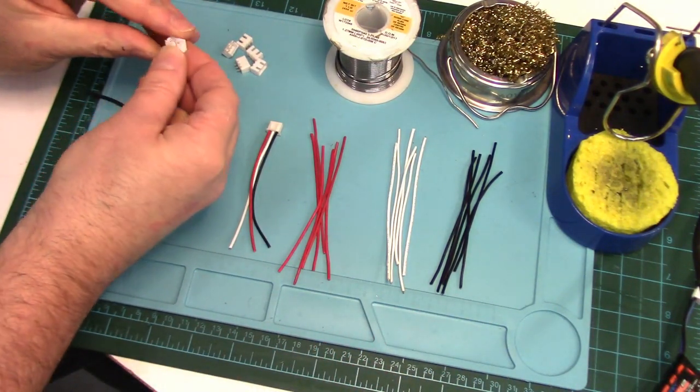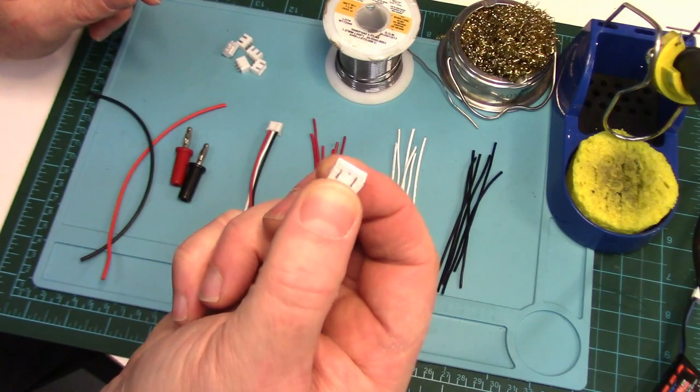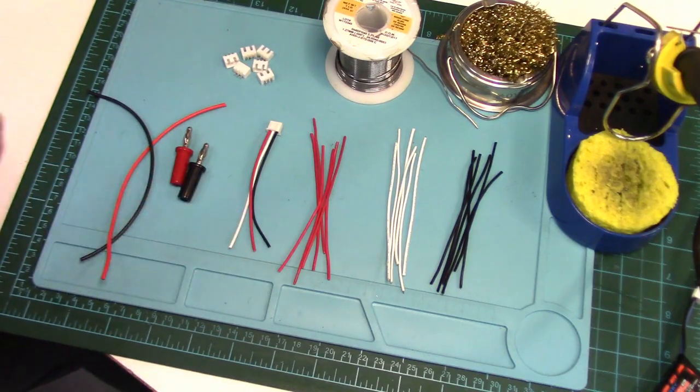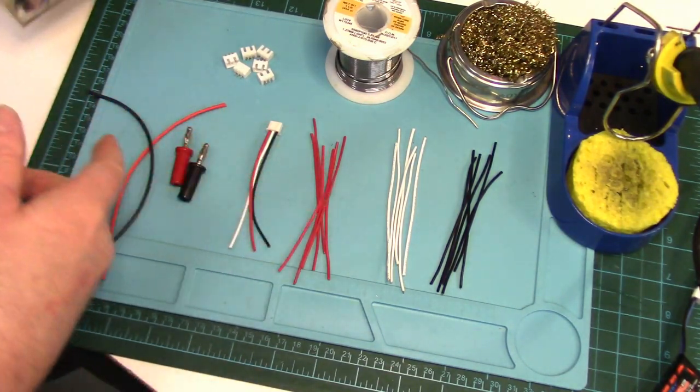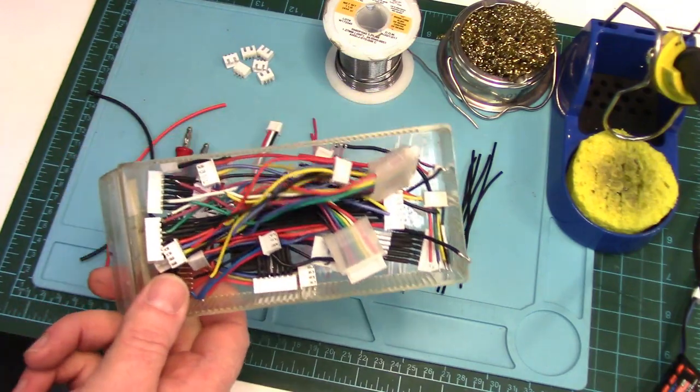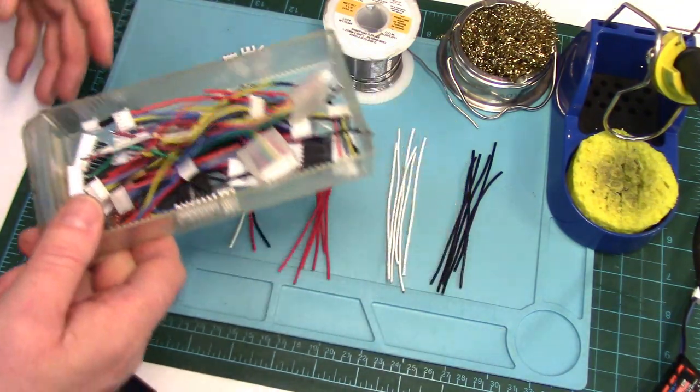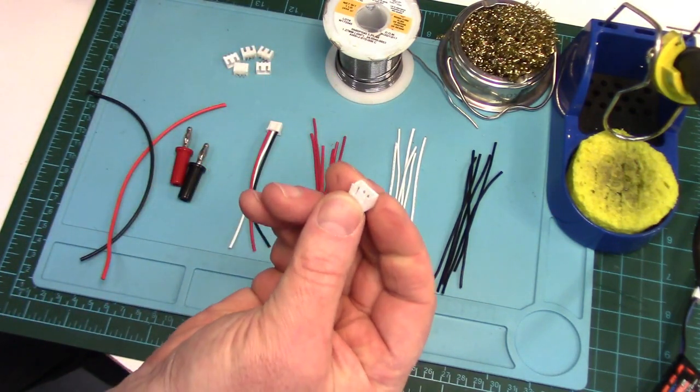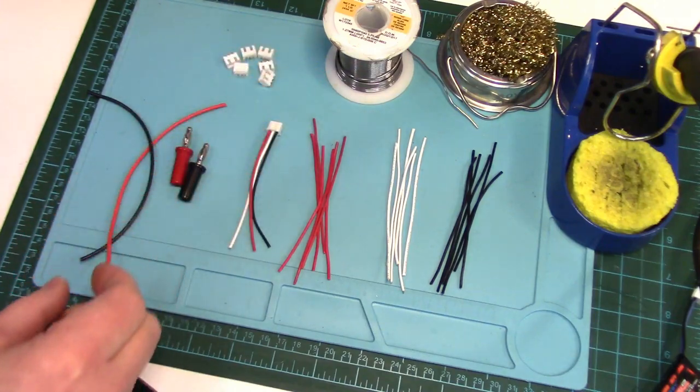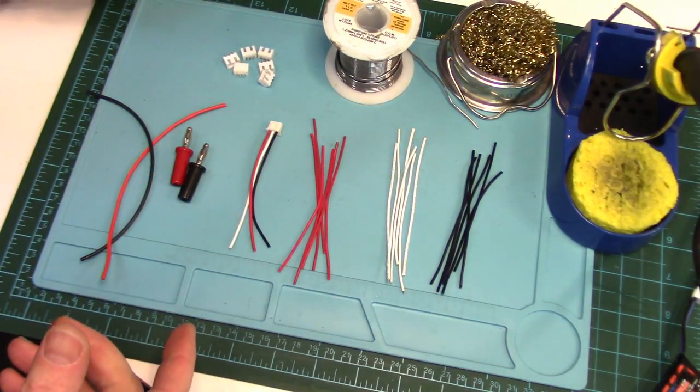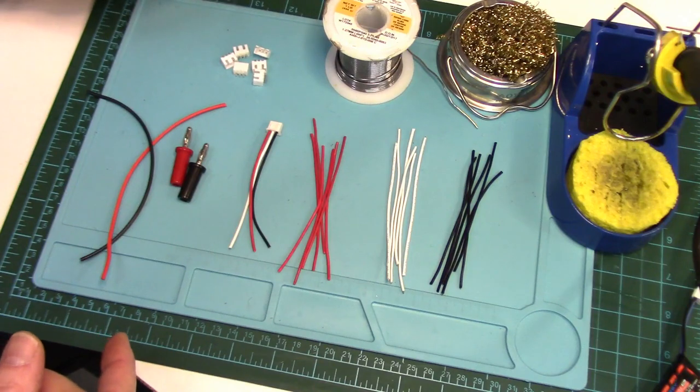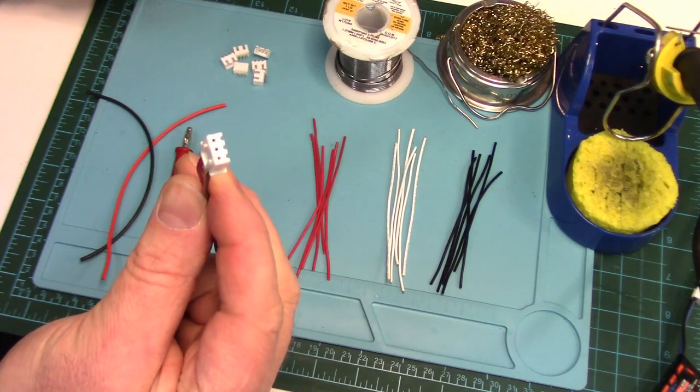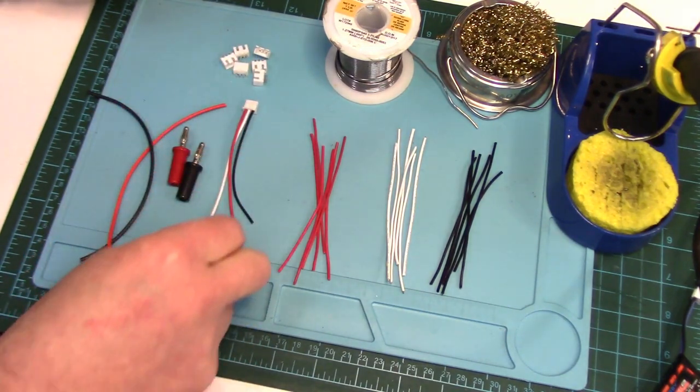You're gonna need six male JST-XH three pin connectors. I'll have links to this stuff below in the description. Of course, a lot of us already have this stuff. I save all my balance plugs and everything from old batteries. So a lot of this I've got off of old batteries. I got these off of an old pair of board that I don't use anymore. So look around, see what you've got already at home. Anyway, you're gonna need six of those.